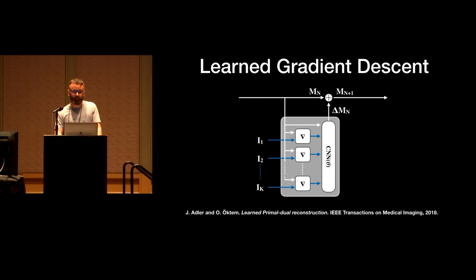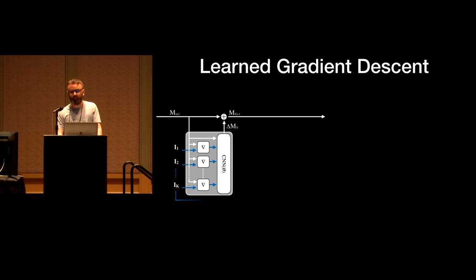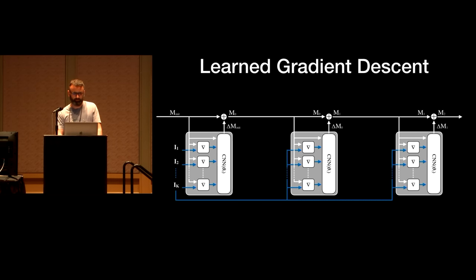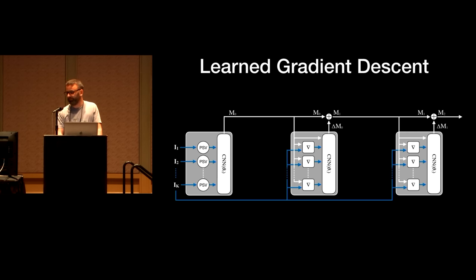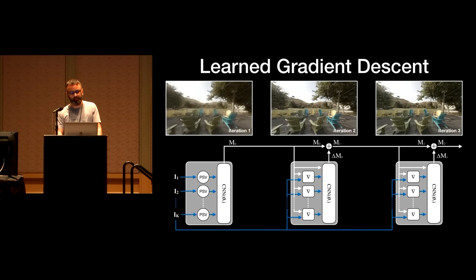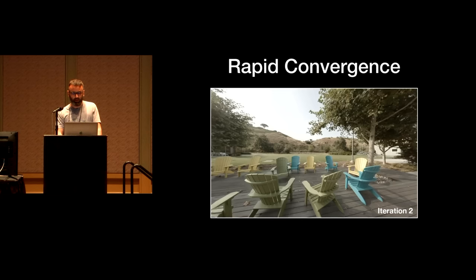We stack gradient computation and update blocks repeatedly, creating a form of recurrent network, and train the complete unrolled network by rendering the generated MPI to a held-out view. There's a significant improvement between the first and second iterations, showing the network makes large improvements at each step and converges quickly. We showed that the gradients provided to the CNN have an intuitive interpretation in terms of visibility cues: the first iteration solves for unoccluded surfaces, while later iterations use this visibility to find better solutions in occluded regions.